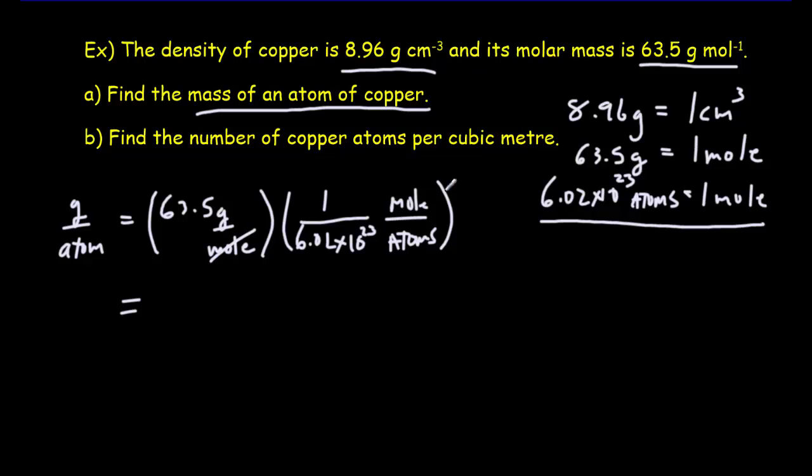And if we multiply that out, notice that we are cancelling out the moles. We are getting grams per atom. And when we do the multiplication there, which is really division, 63.5 divided by 6.02 times 10 to the 23rd, we get an answer of 1.05 times 10 to the minus 22 grams per atom.